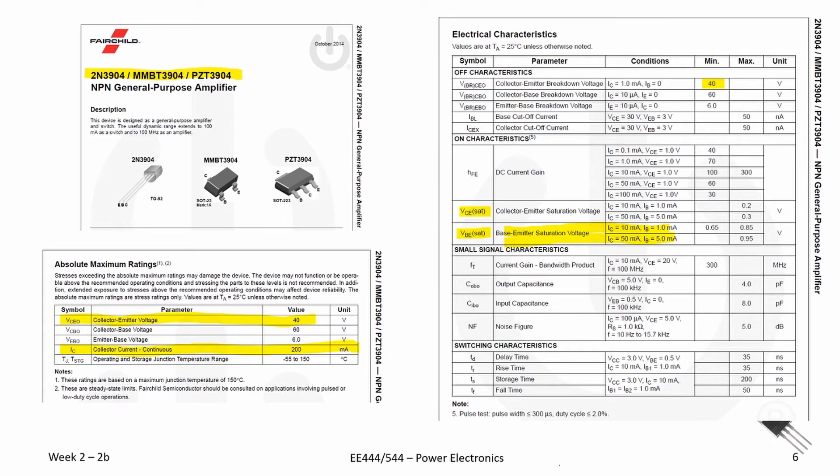The first thing we want to check on selecting a device for this application is, will the reverse breakdown voltage exceed the power supply we have? Up here you see we've got 40 volts for our reverse breakdown voltage, and it does, so that checks.